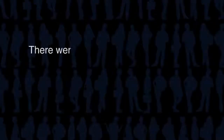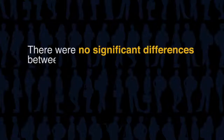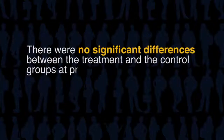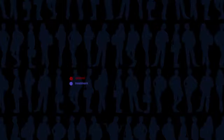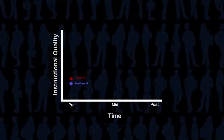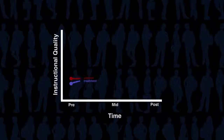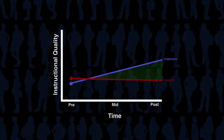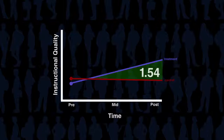There were no significant differences between the treatment and the control groups at pretest. An analysis of variance on the other data collections showed that there was a main effect for treatment that was significant, and that there were significant differences among the main effect at measurement occasion.